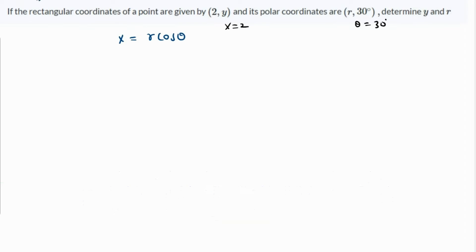Let's plug in the value of x. So x is 2, r is unknown, and θ is 30 degrees, which means that 2 equals r times cosine of 30, which is √3 over 2.